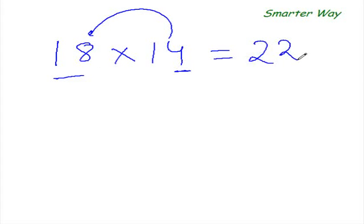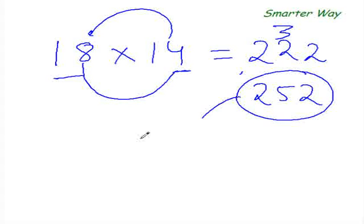What is, let's say, 18 times 14? So first thing, add this 4 to 18. 18 plus 4 is 22. Right. So 8 times 4 is 32. Carry forward 3, write 2 here. 22 plus 3 is 25. So the answer is 252. That's your answer.